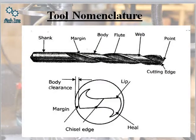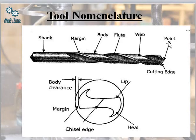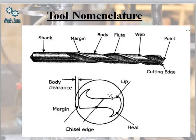Now let's look at tool nomenclature. The shank is the part that goes inside the drilling machine. Other parts include the margin, the body, the flute, and the web portion. At the tip we have the cutting edge, the point, the clearance, the chisel edge, the margin, and the lip. The shank is inside the machine and the point end is where the cutting takes place.